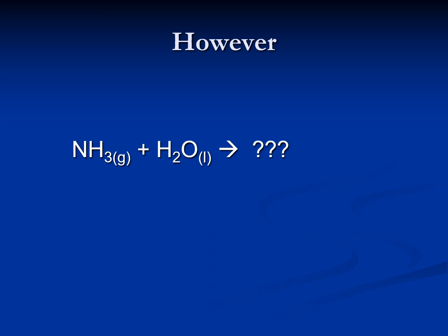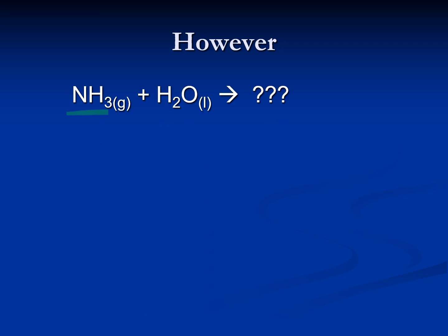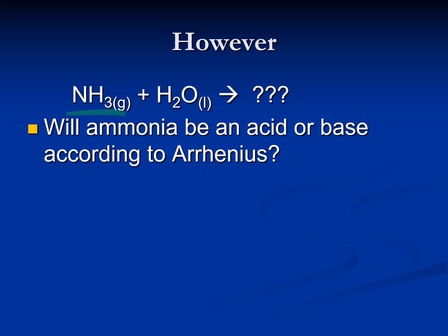However, when you put something like ammonia into water, what you see is that you get a pH above 7, so ammonia acts like a base. But as you can see, there are no hydroxide ions in ammonia — there's no way to get a hydroxide ion from ammonia itself. So it must not be only things that have hydroxide ions that can act as a base.